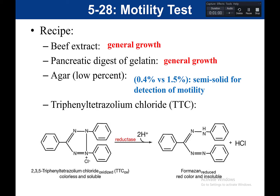It's a low concentration, and it's there to make a semi-solid for the detection of motility. Because if it's a broth, the bacteria are all going to mix together and you're not going to be able to determine motility. If the agar concentration is too high, bacteria are not going to be able to move through the agar. So we need a low percentage of agar to form a semi-solid for the detection of motility. Next, we have triphenyl tetrazolium chloride, otherwise known as TTC — just know TTC.